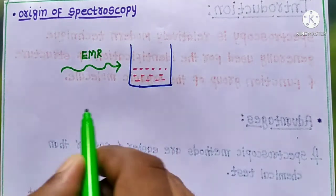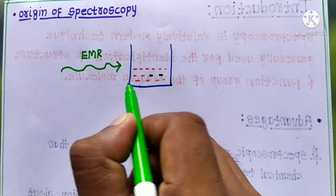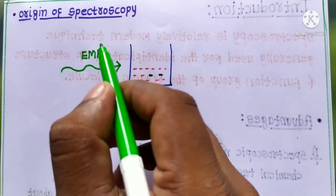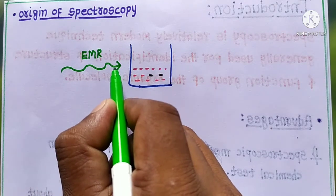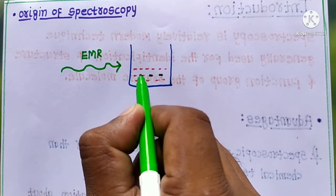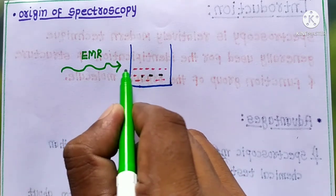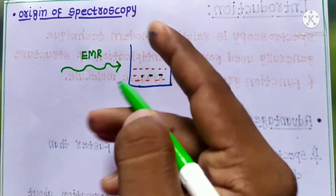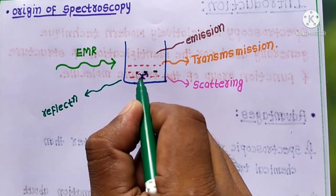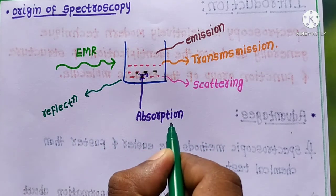Now the origin of spectroscopy: suppose we have an organic solution containing a number of molecules. When electromagnetic radiation passes through this solution, an interaction takes place between the organic molecules and the electromagnetic radiation. Many types of processes are possible — some radiation can be absorbed by the molecules present in the solution; the absorption process is possible.